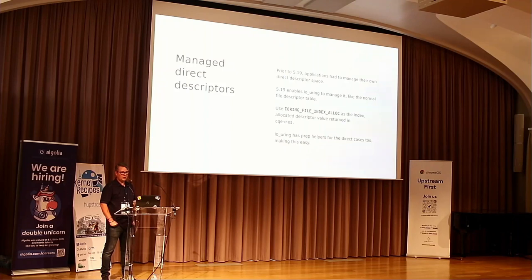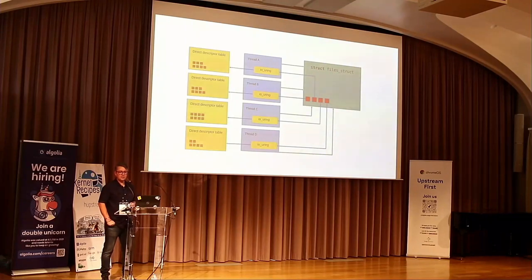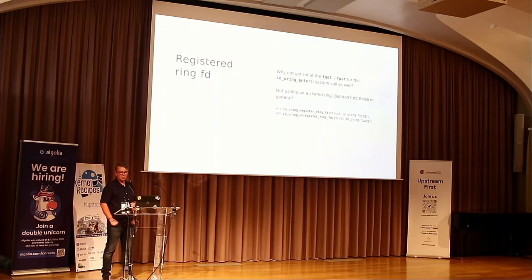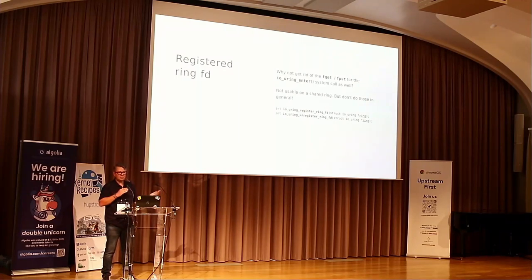With managed file descriptors in 5.19, anything that supports instantiating direct descriptors can get a free one out of the pool — no guarantees about which one, no POSIX-style lowest-available rules. And going back to the flow: the ring itself is still a file descriptor, so when you do io_uring_enter to submit things, you're still doing fget/fput on the ring itself. A recent addition allows you to register the ring descriptor itself to avoid that overhead too, eliminating the last bit of per-syscall reference counting depending on how efficiently you batch io_uring_enter versus submitting IO.